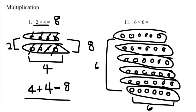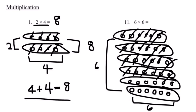Now let's add the numbers together to find our final answer. Counting all 36 circles across the six groups: 1 through 36. Therefore, six times six, or six groups of six, equals 36.